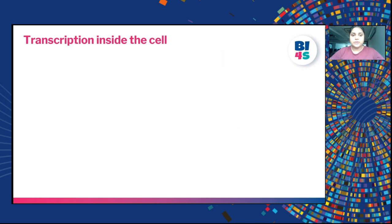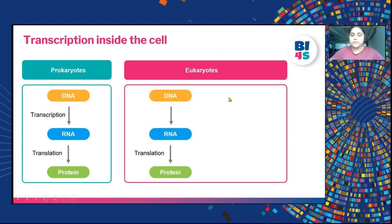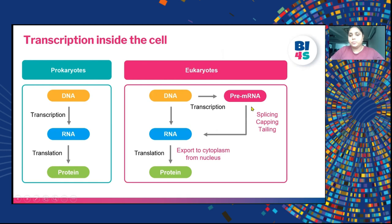Now let's look at transcription inside the cell. In prokaryotic transcription, DNA is transcribed into RNA and then RNA is translated into protein. However, for eukaryotes there are additional steps. DNA is first transcribed into pre-mRNA, which is then spliced, capped and tailed — that is, processed into mature mRNA — which is then translated in the cytoplasm after the RNA is exported from the nucleus.